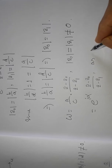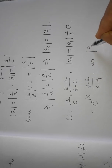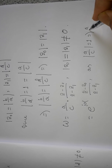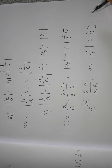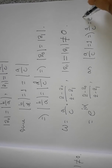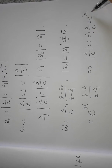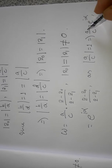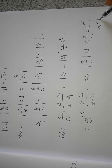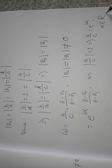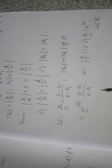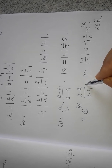Since |a/c| = 1, we can write a/c = e^(iα), where α is the argument of a/c and α is a real number. So we have w = e^(iα) · (z − z₀)/(z − z₁).